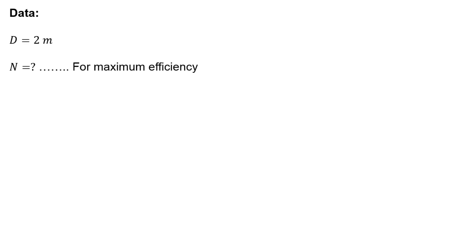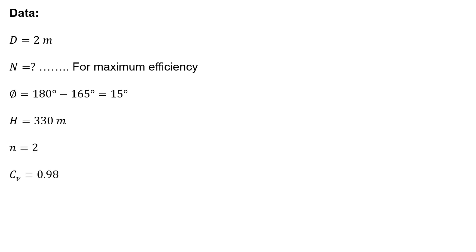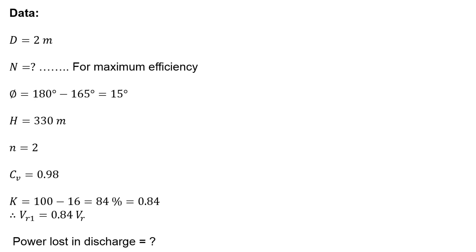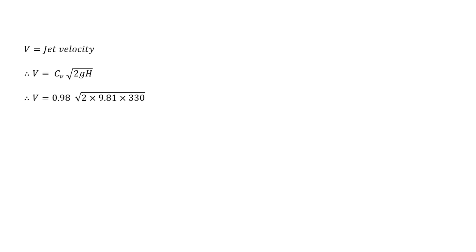First we'll write down the data: D is given as 2 meters, N we have to find for maximum efficiency condition, phi is 180 minus 165 that is 15 degrees, net head is 330 meters, number of jets is 2, Cv is equal to 0.98, k is 100 minus 16 that is 0.84, therefore vr1 is equal to 0.84 times vr. We also have to calculate the power lost in discharge.